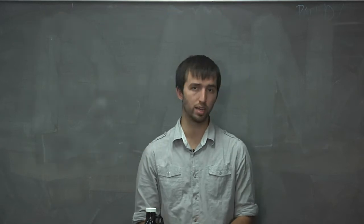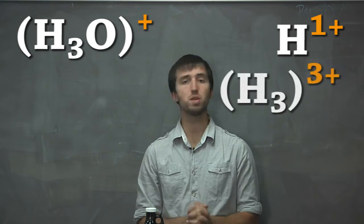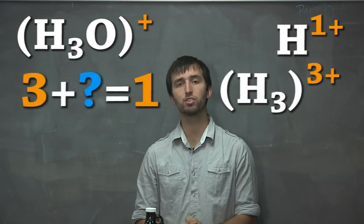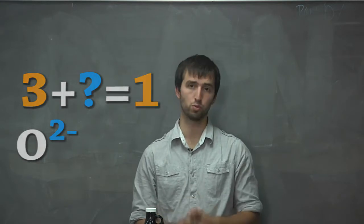For example, if we have H3O plus, and we know that H is plus one, and since there's three of them, we have three plus. The oxygen must therefore be two minus, in order for the overall charge to be plus one.